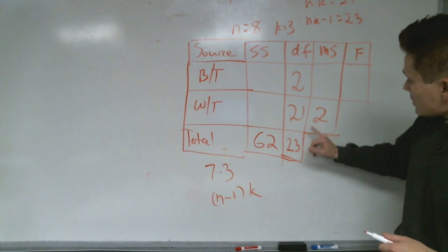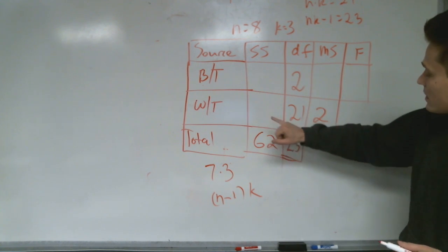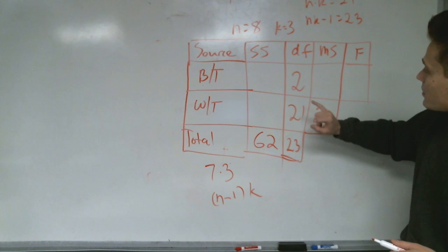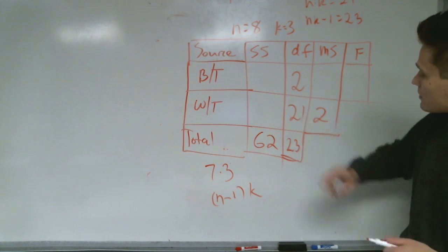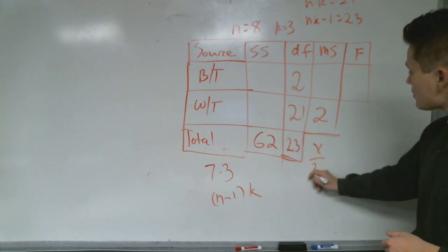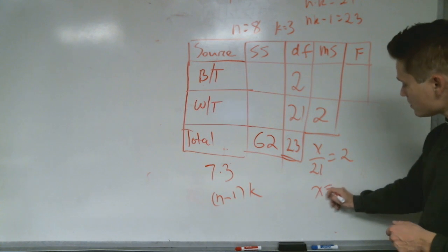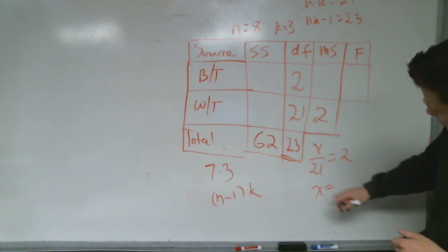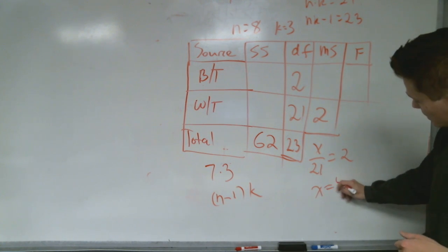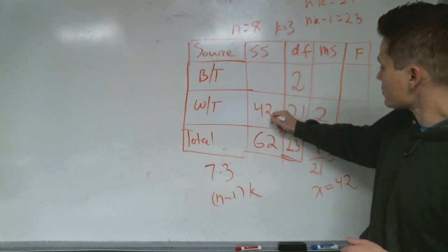Now, if the mean square for within is 2, and we have 21 degrees of freedom, then we have x over 21 must equal 2. Therefore, x equals 21 times 2, which is 42. So the sum of squares for within is 42.